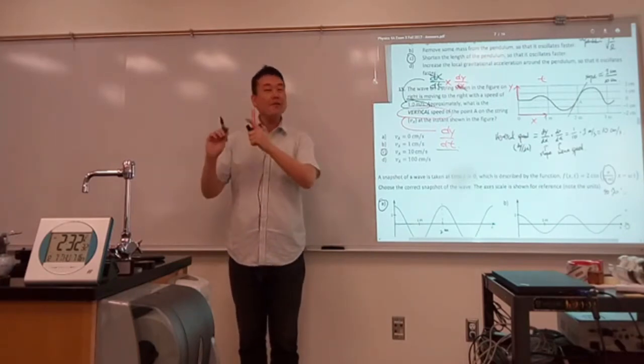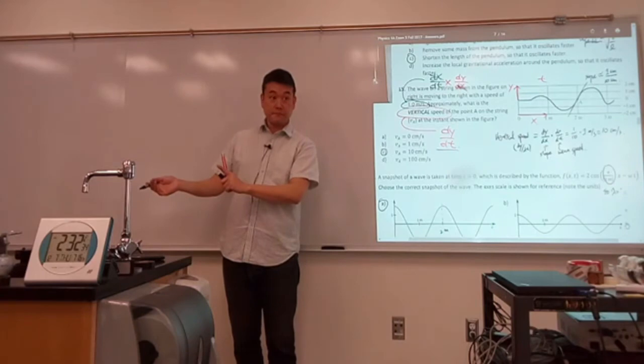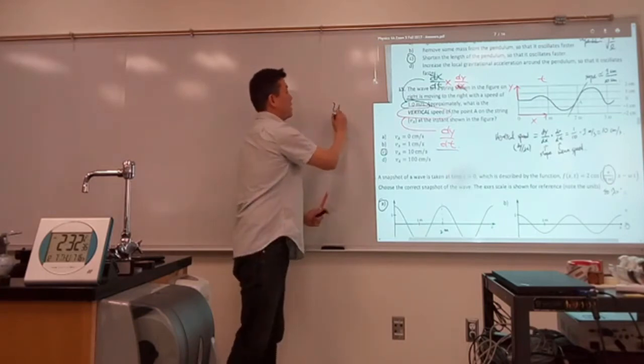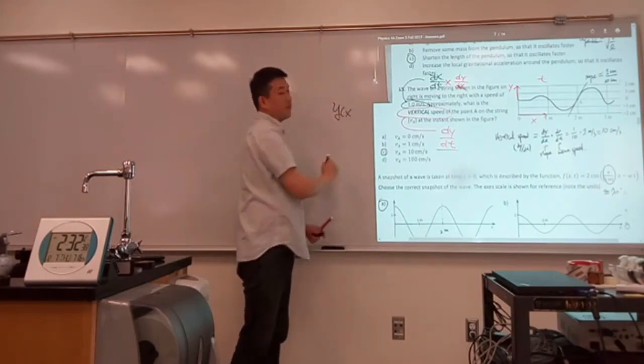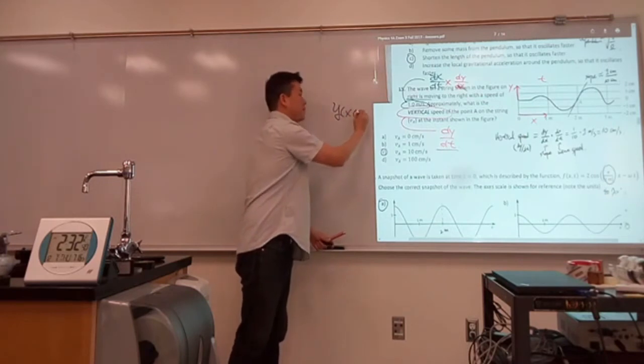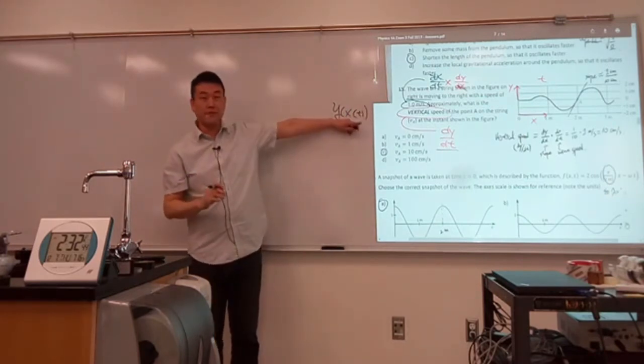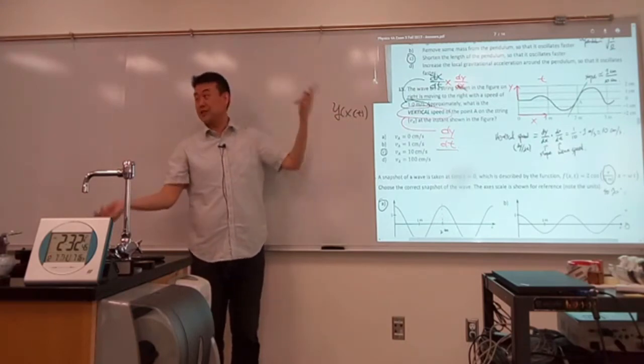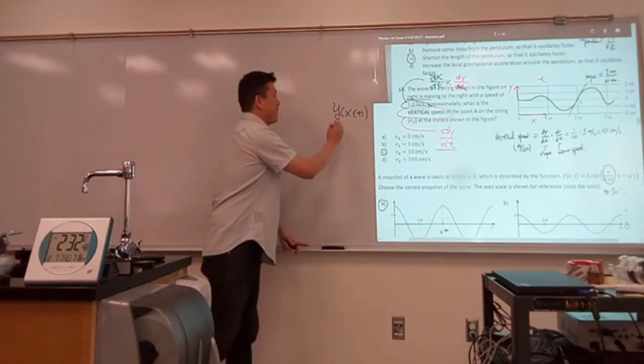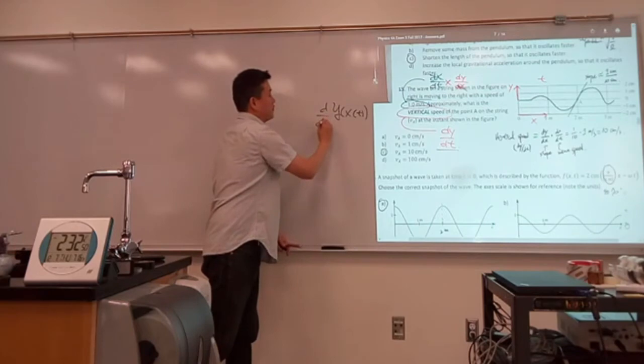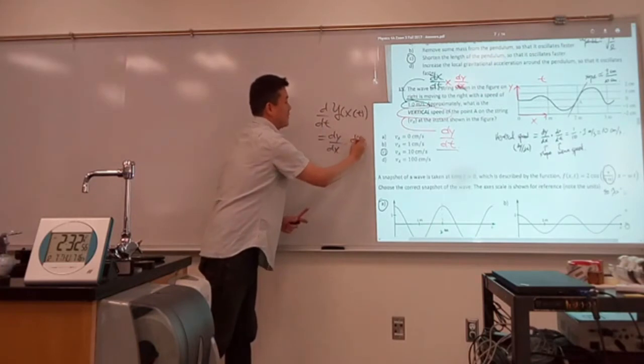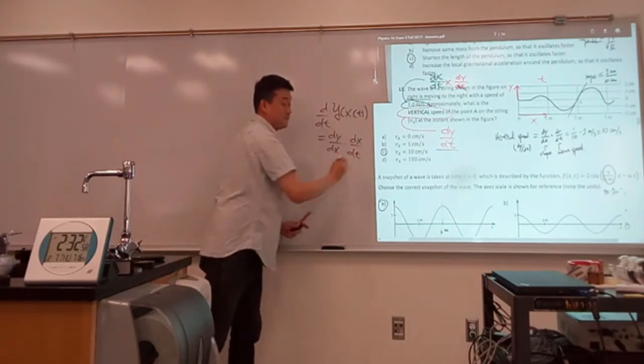But how it actually works is chain rule. So what you have is Y can be expressed as a function of X, which is a function of time. So when you take the derivative of this with respect to time, then using the chain rule, you get, derivative of this with respect to time is equal to derivative of this, dy dx, and then derivative of the inside, dx dt, right?